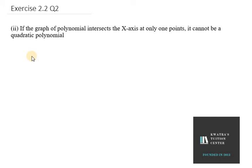Hello everyone, let's start with the second part of question number two. It says if the graph of a polynomial intersects the x-axis at only one point, it cannot be a quadratic polynomial. So this is wrong to say - it can be a quadratic polynomial.